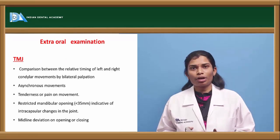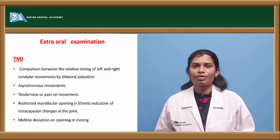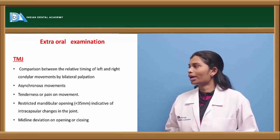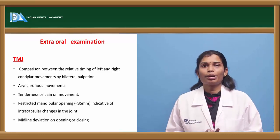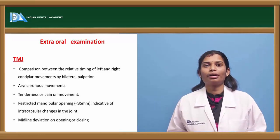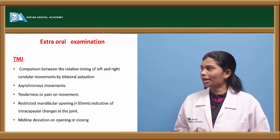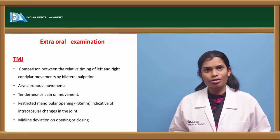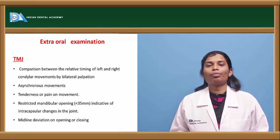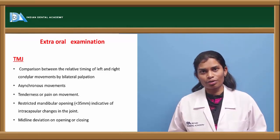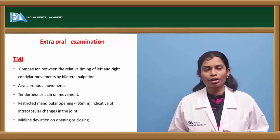The next component is extra-oral examination. The first and foremost element is the TMJ examination. You have to compare TMJ movements between the right and left sides on inspection, palpation, and auscultation. Check for any asynchronous movements, tenderness or pain on movement, deviation during opening, the amount of maximal opening, and other TMJ-related findings. On palpation, also assess the muscles supporting the TMJ and mandible.